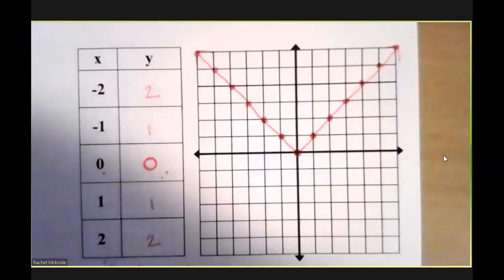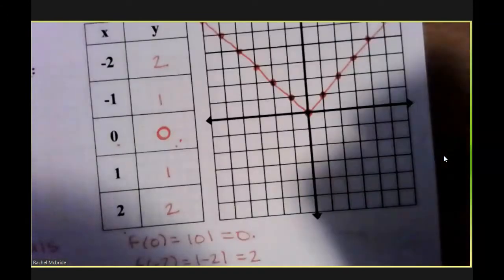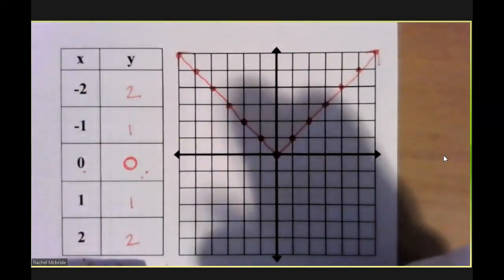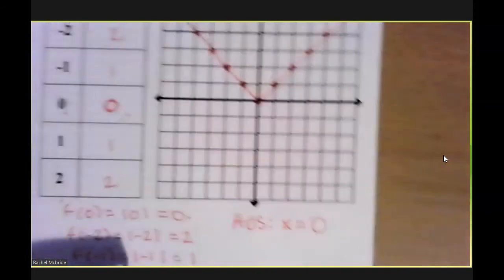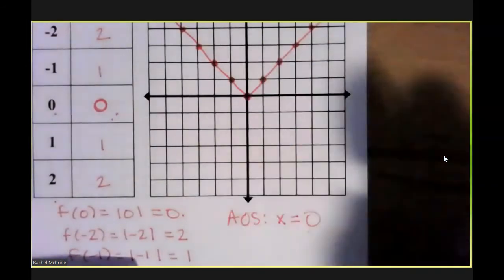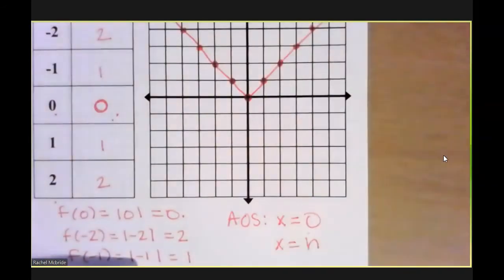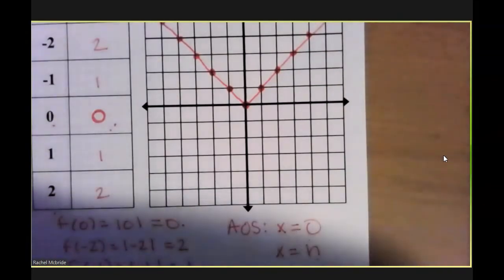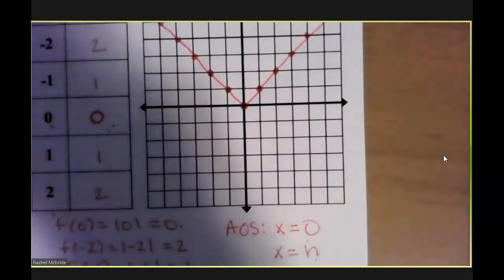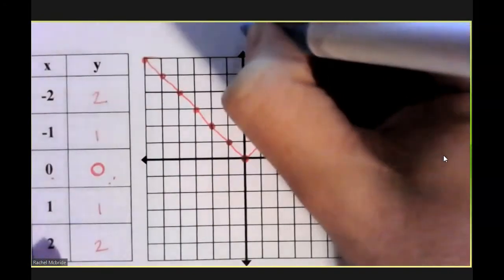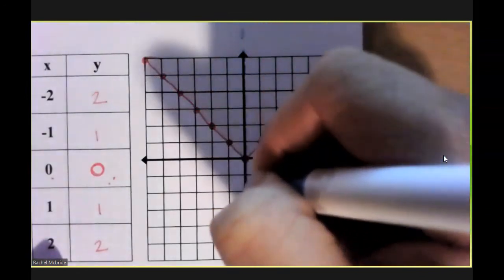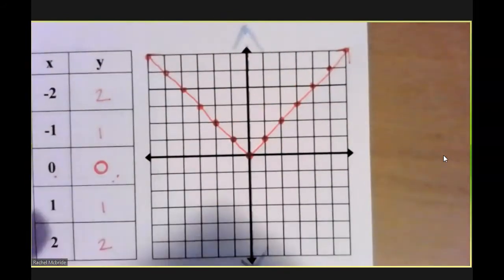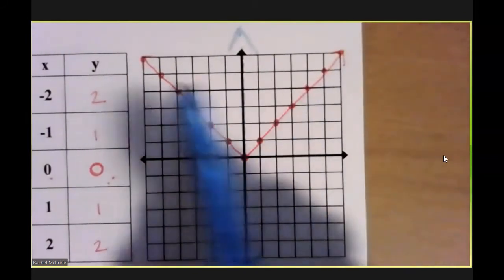So there's my parent absolute value function. Remember, an absolute value function has a line of symmetry. So it is going to be symmetric about the line that goes through the vertex. So it will always have an AOS of x equals h. In this case, my h value is 0. Therefore, I have a line of symmetry through x equals 0, which means that I could take my graph and fold it in half across that line, and all of my points will match up.